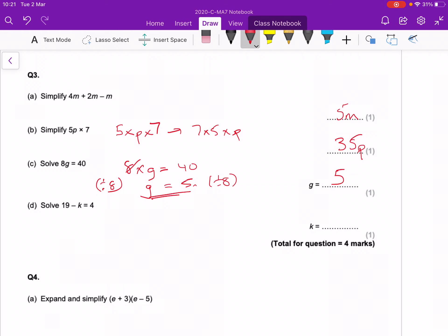And then this one, 19 minus k equals 4. Take away 4 from both sides, so minus 4 and minus 4 means that 15 minus k equals 0.